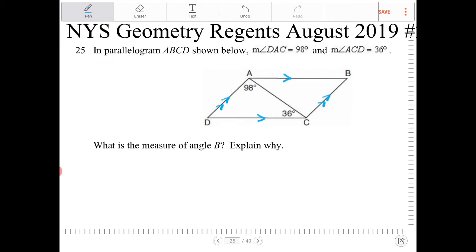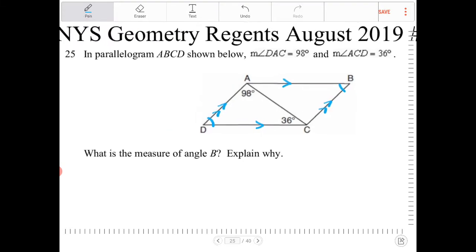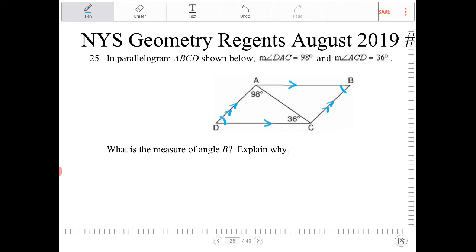Angle B is this angle over here. So I understand that angle B is going to be congruent to angle D because opposite angles in a parallelogram are congruent. So therefore, in triangle ADC, I know two out of three angles, therefore I can determine what is angle D.